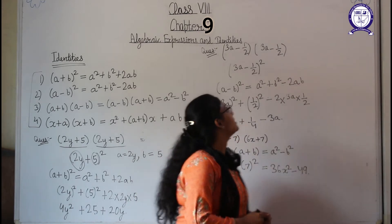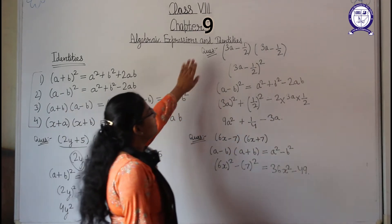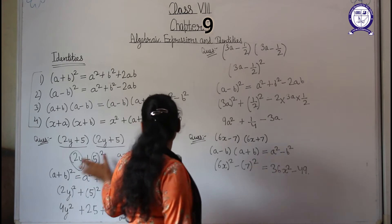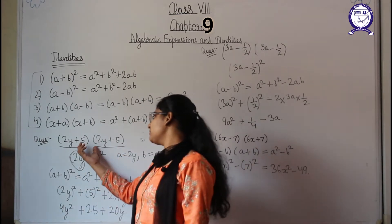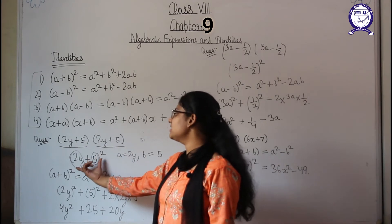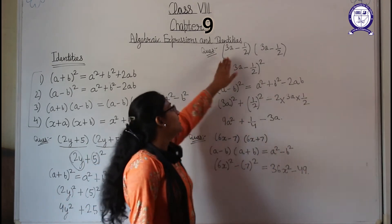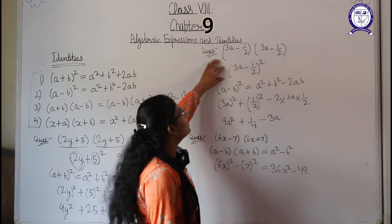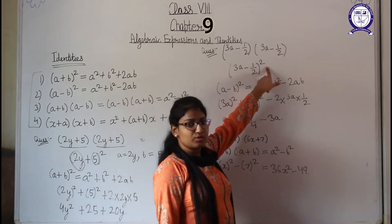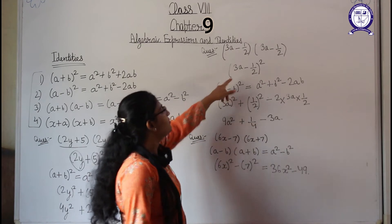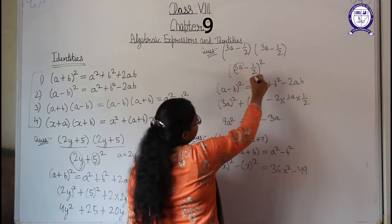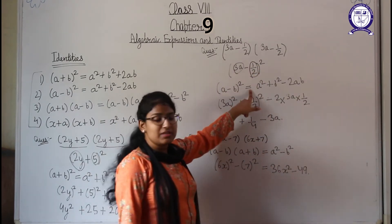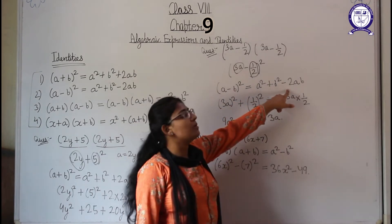Next question: (3a − 1/2) multiplied by (3a − 1/2). Since 3a − 1/2 repeats itself, we write (3a − 1/2) whole square. Taking a = 3a and b = 1/2, this is the second identity: (a−b)² = a² + b² − 2ab.